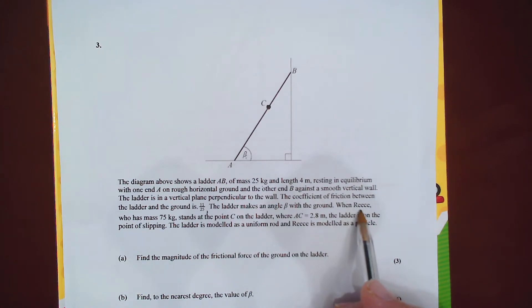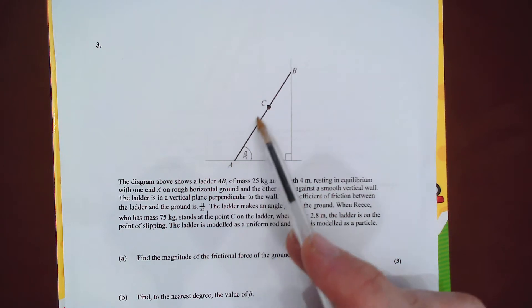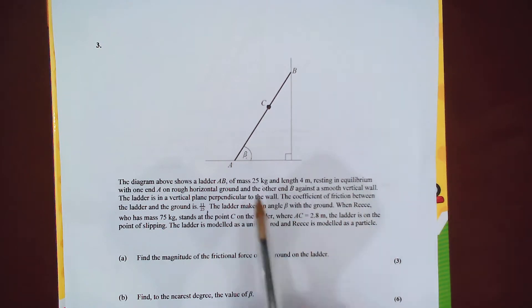Now Reese is going to stand on this ladder at point C which is 2.8 meters along the ladder, and it could be on the point of slipping. That's crucial information because it means we'll have limiting friction.